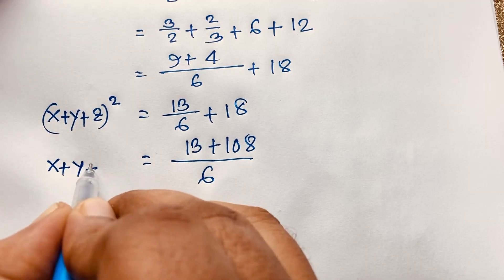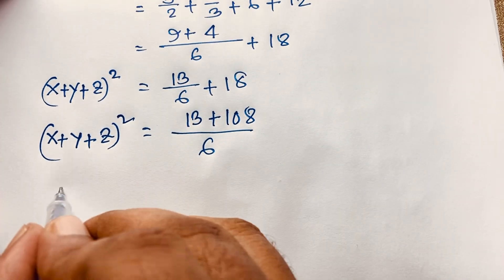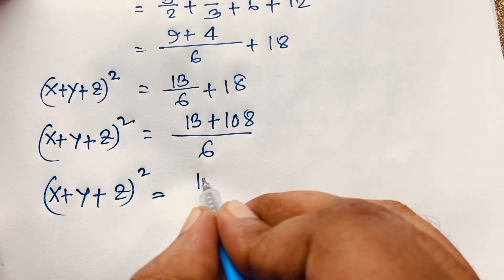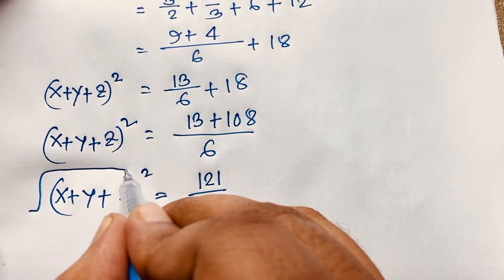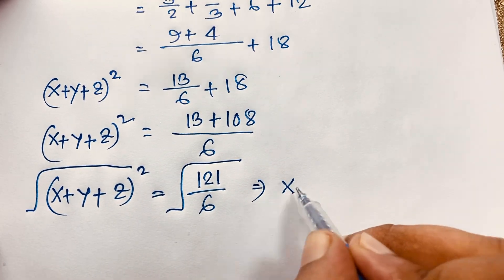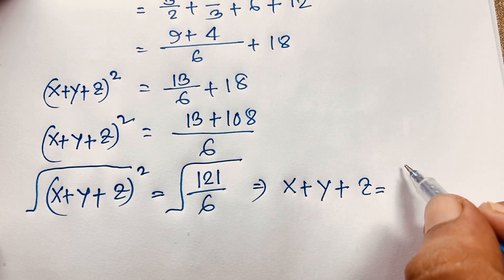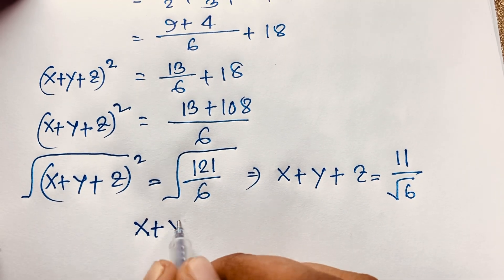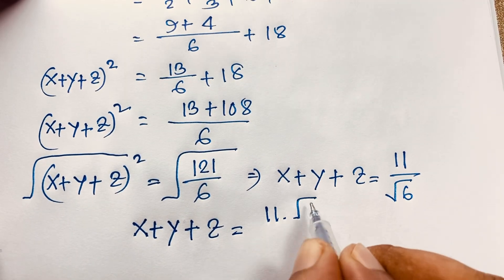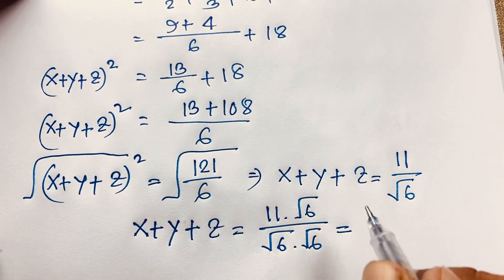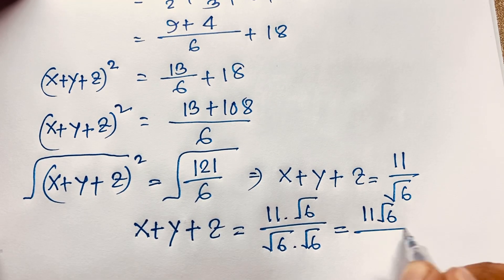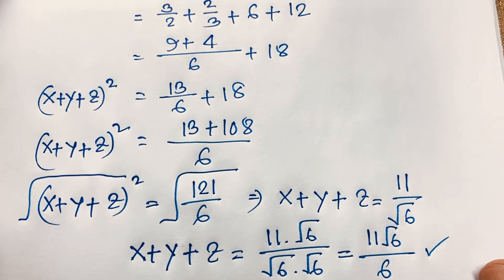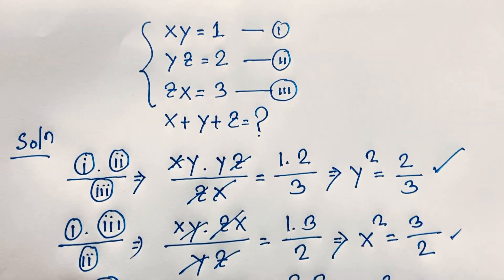So (x + y + z)² = 121/6. Taking the square root of both sides gives x + y + z = 11 over √6. Rationalizing by multiplying both sides by √6: x + y + z = 11√6 / 6. This is our final answer to this Math Olympiad question. Thank you all — if you enjoyed this, please subscribe for more interesting videos. Goodbye, take care!